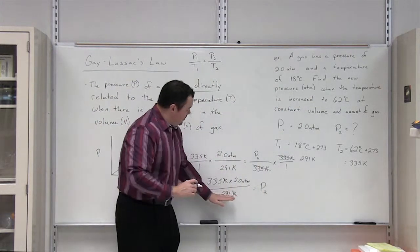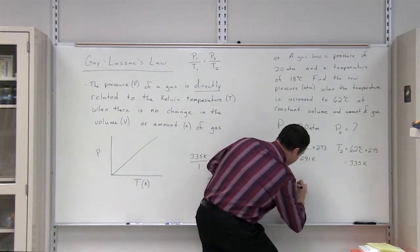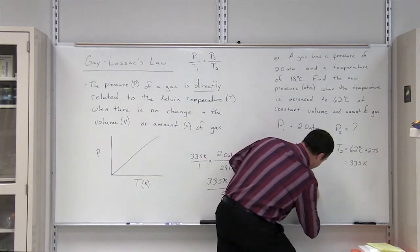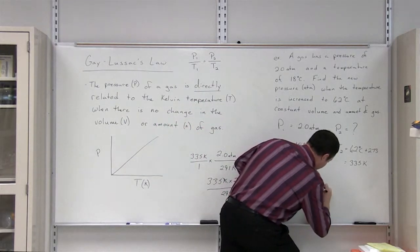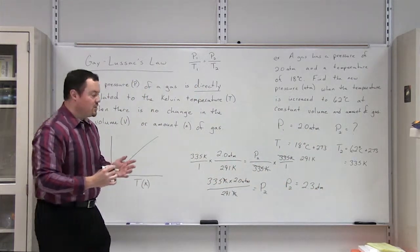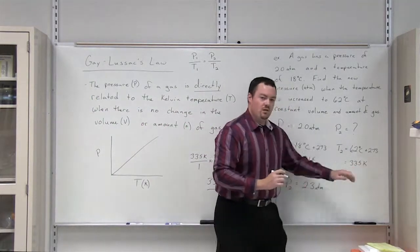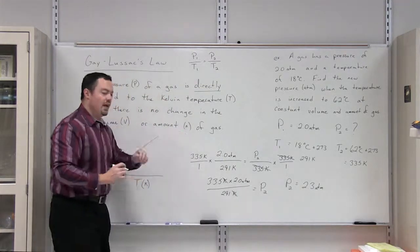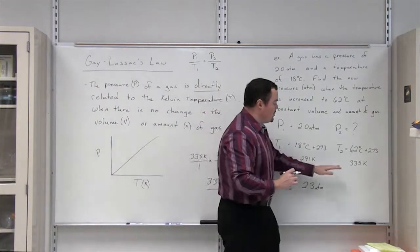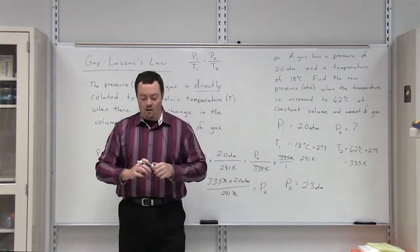So whenever we input this, we find that P2 is equal to 2.3 atmospheres. And that's what we would expect. Because if you look here, we increased the temperature of our gas. According to Gay-Lussac's law, which states that there's a direct relationship, so when our temperature increases, our pressure should also increase. And that's what occurred.